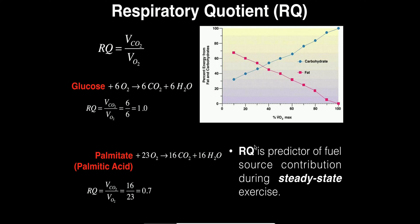Respiratory quotient RQ is defined mathematically as the volume of exhaled carbon dioxide divided by the volume of inhaled oxygen. But to understand this we should look at the equation for complete catabolism of glucose from cell respiration, which you probably saw all the way back in general biology.